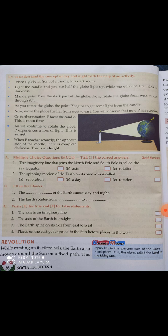Move the globe farther from west to east and you will observe that now P has sunshine. So as you slowly keep rotating, P starts to receive sunshine. With further rotation, P faces the candle — this is noon time. When P comes exactly in front of the candle, it gets more light. This means it is noon time, and this is how the earth receives light from the sun.